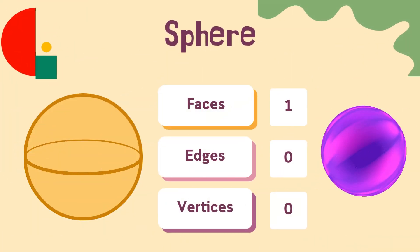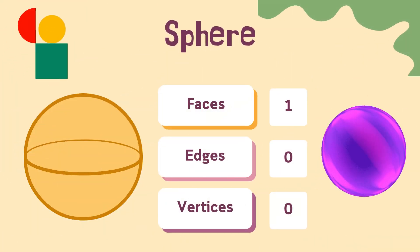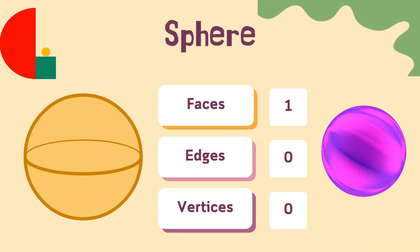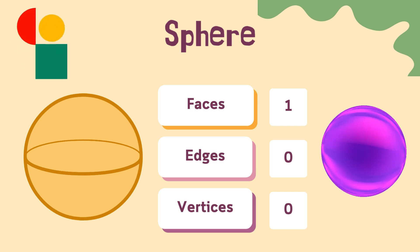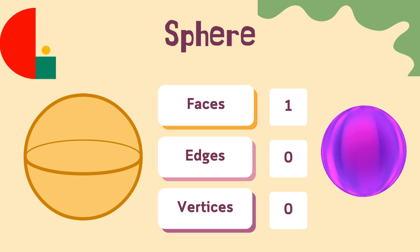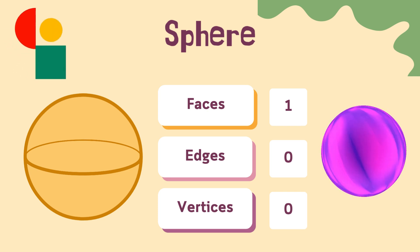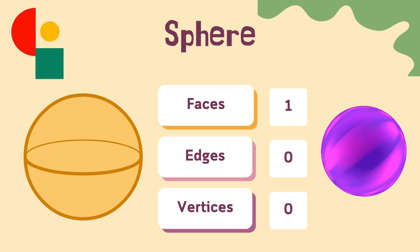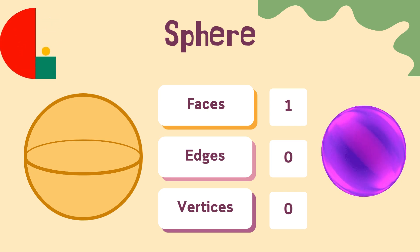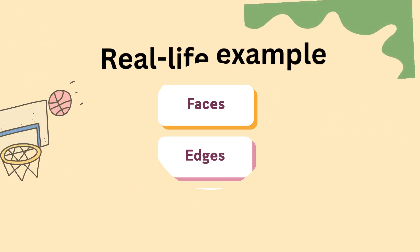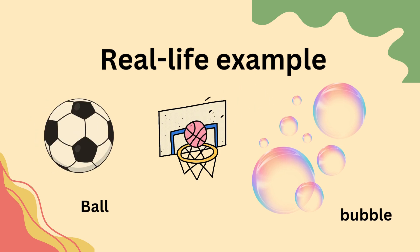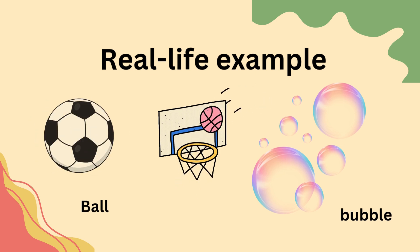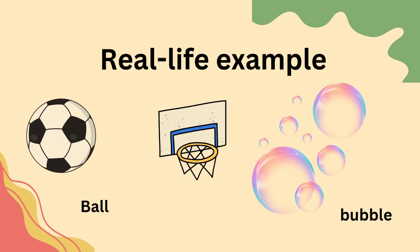Hello. I'm a sphere. I'm round all over — no flat parts at all. I have no faces, no edges, and no vertices. I look like a ball — like a football, basketball, or even a bubble. I'm fun to roll and bounce.